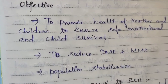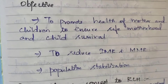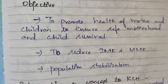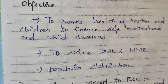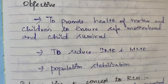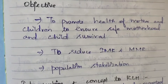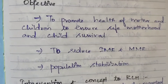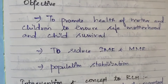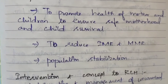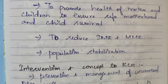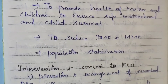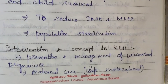The main objective of the RCH program is to promote the health of mothers and children, to ensure safe motherhood and child survival, and to reduce the infant mortality rate (IMR) and maternal mortality rate (MMR), and to stabilize the population.